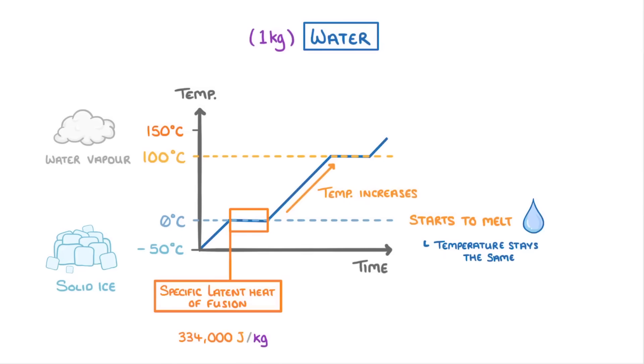This time though, the energy required is the specific latent heat of vaporization, which is 2,260,000. And once the water has all boiled into water vapor, its temperature continues to increase like normal.